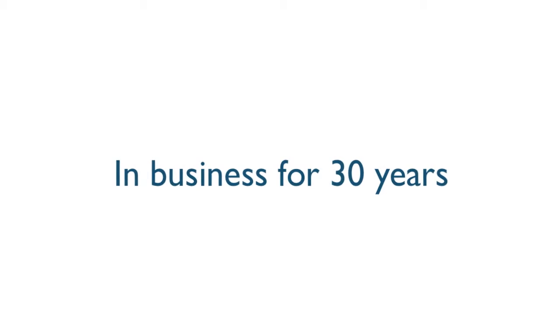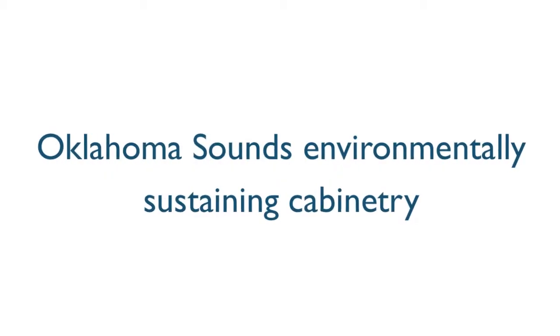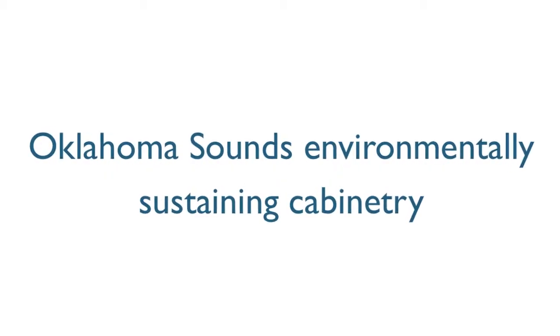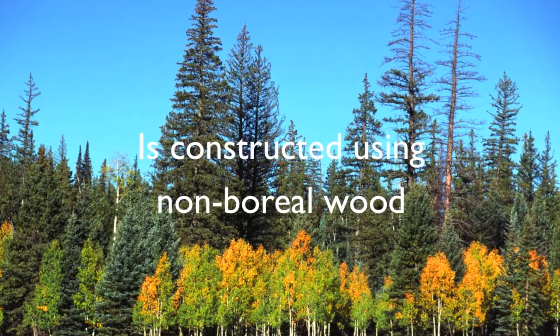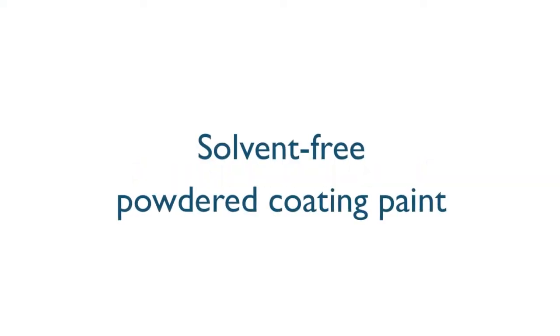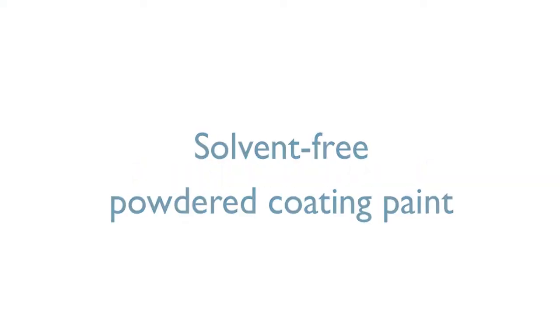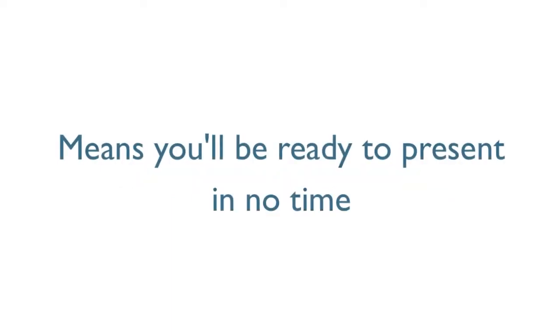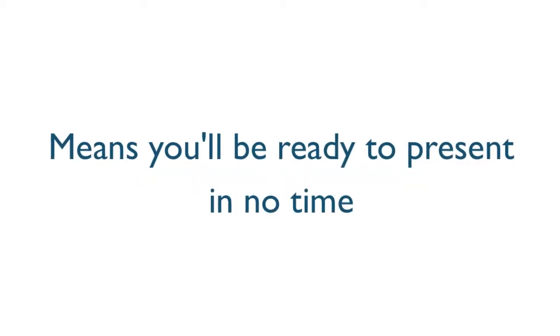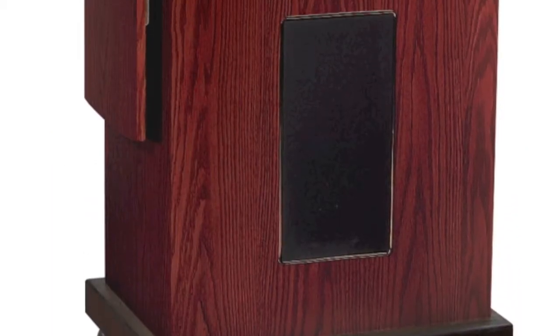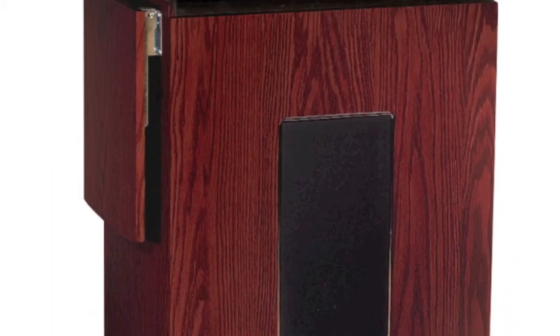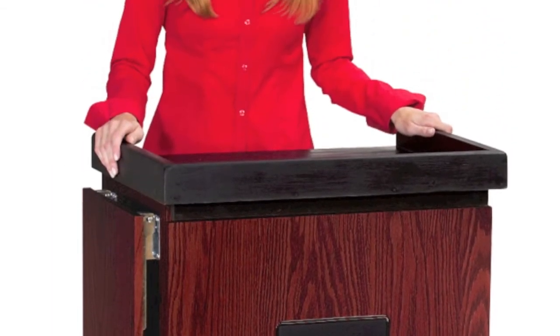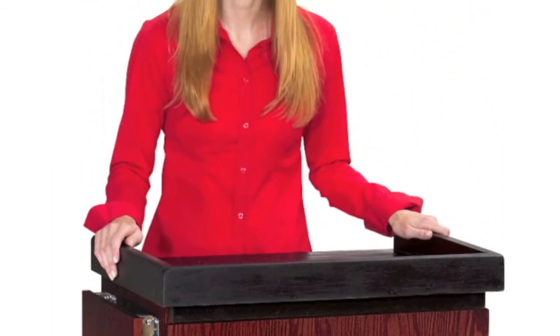In business for over 30 years, Oklahoma Sound's environmentally sustaining cabinetry is constructed using non-boreal wood, post-consumer steel, and solvent-free powder coating paint. With a five-year warranty, our always-in-stock 48-hour quickship means you'll be ready to present in no time.